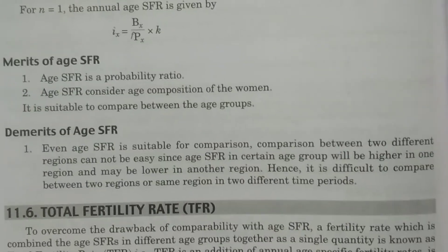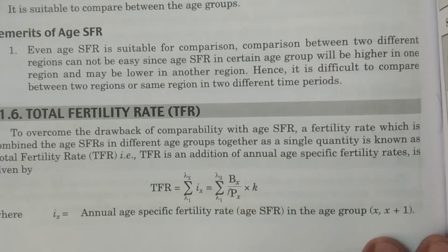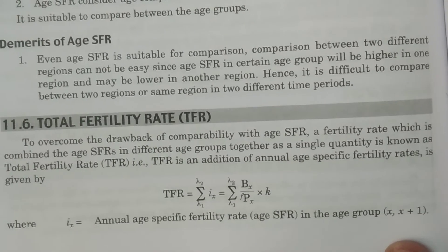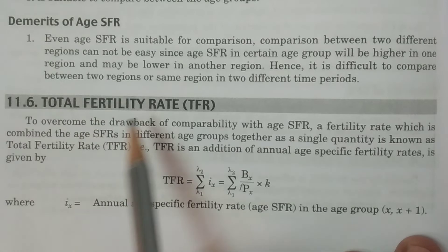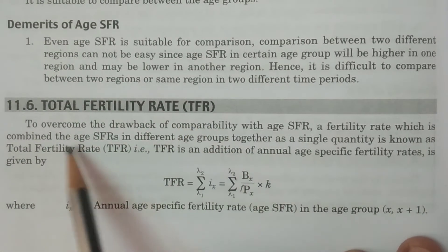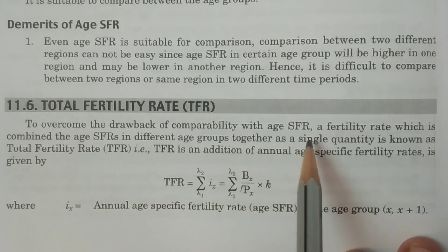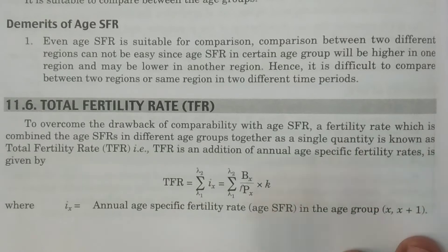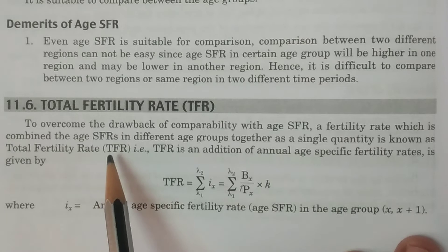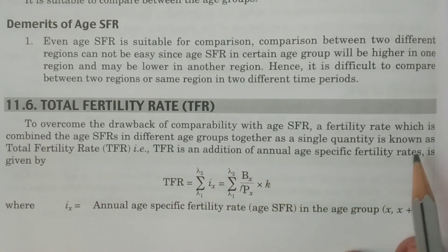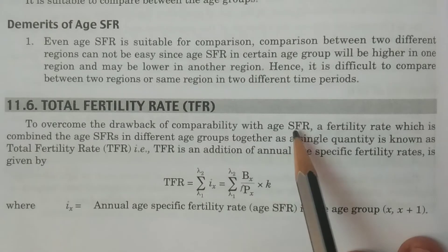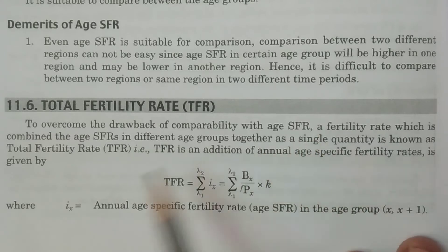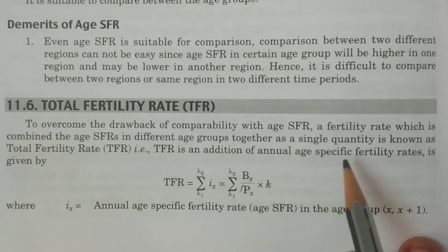To overcome this particular drawback, another measure was discovered which is known as total fertility rate — another fifth measure of fertility. Total fertility rate is called TFR. To overcome the drawback of comparability with age specific fertility rates, a fertility rate which combines age specific fertility rates in different age groups together as a single quantity is known as total fertility rate. We add all the age specific fertility rates and get the total fertility rate.